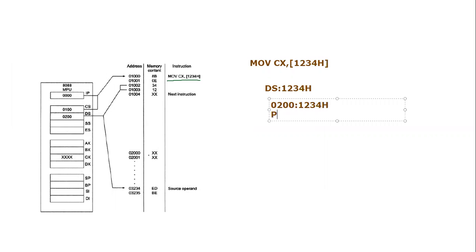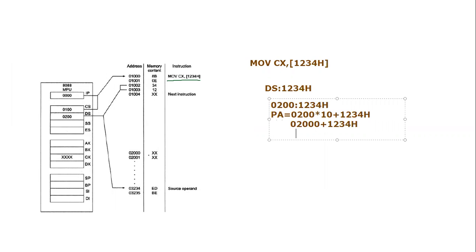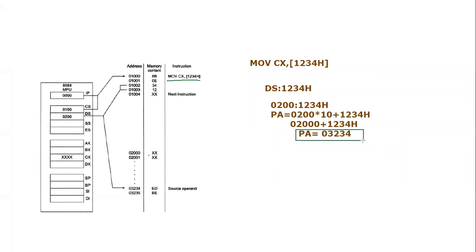Calculating the physical address: 0200h × 10h = 02000h, plus 1234h equals 03234h. So the physical address is 03234h. At this specific memory location, some value is stored, and that value will come into the CX register. Currently we don't know the content of CX, but after execution the value from address 03234h will be loaded into it.